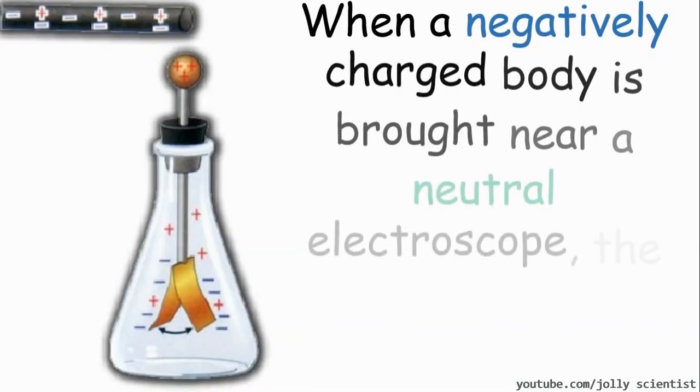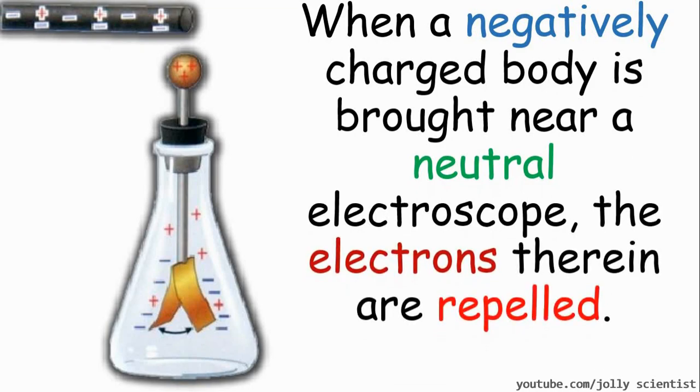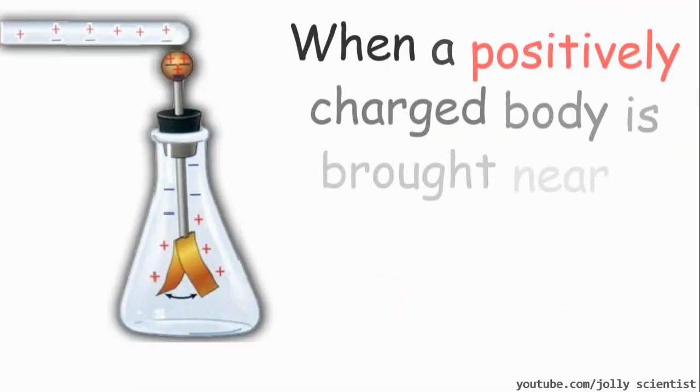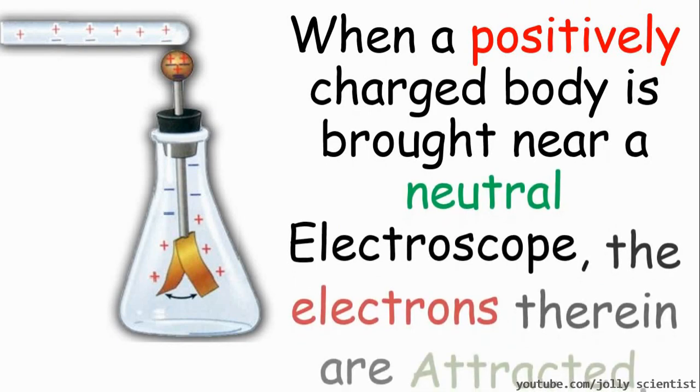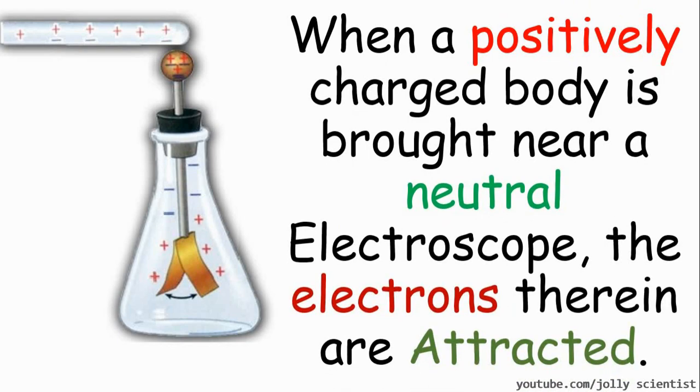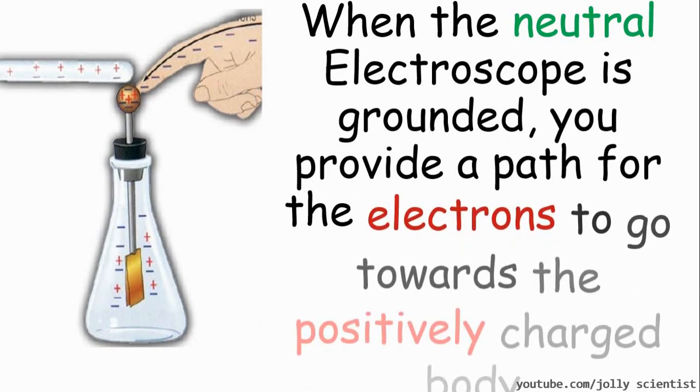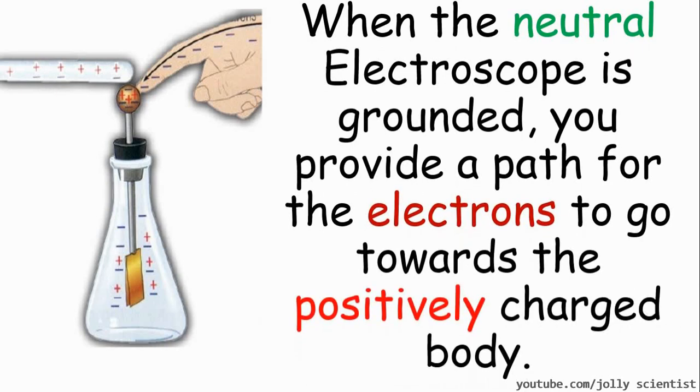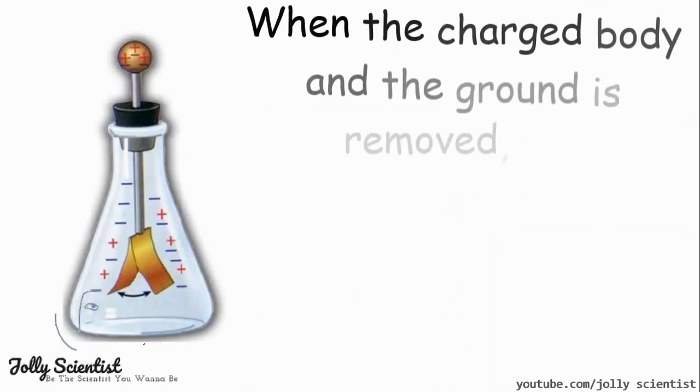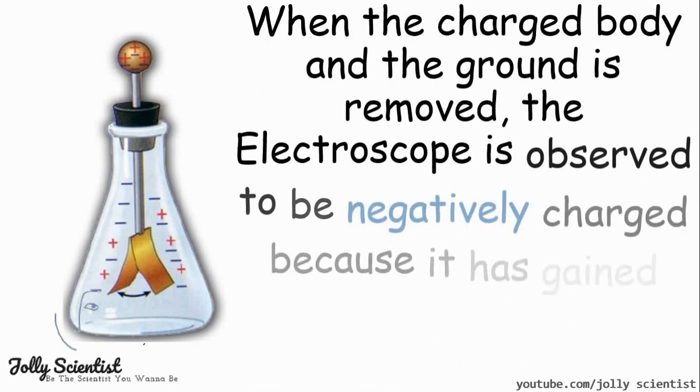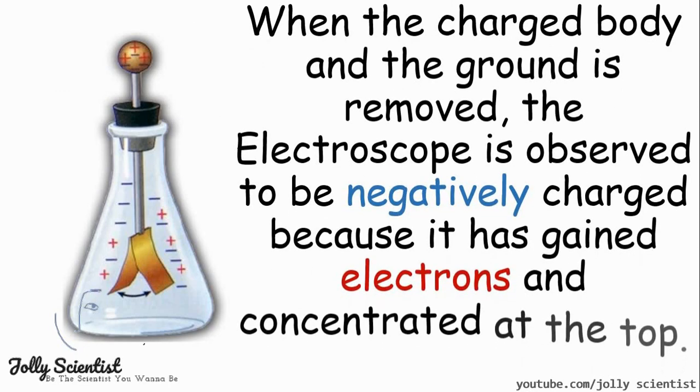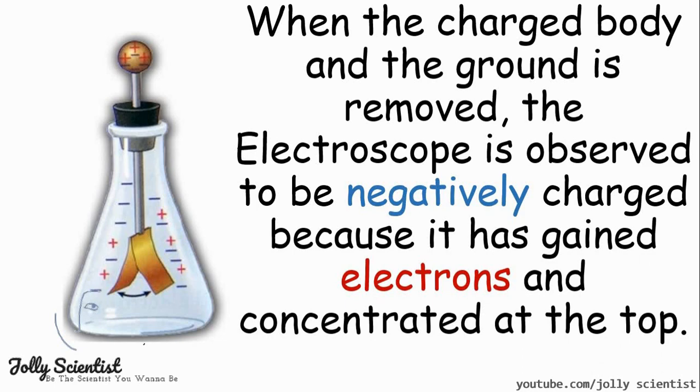When a negatively charged body is brought near a neutral electroscope, electrons therein are repelled. But when a positively charged body is brought near a neutral electroscope, the electrons therein are attracted. When the neutral electroscope is grounded, you provide a path for the electrons to go towards the positively charged body. And when the charged body and the ground is removed, the electroscope will be negatively charged because it has gained electrons concentrated on the top.